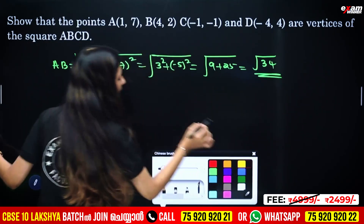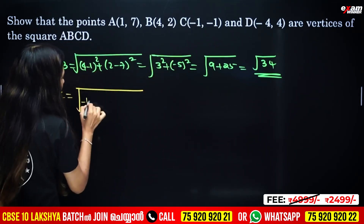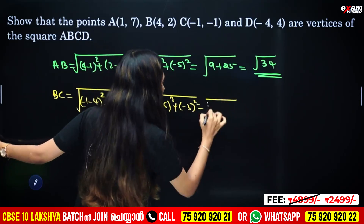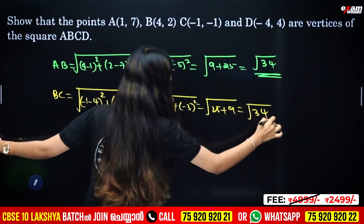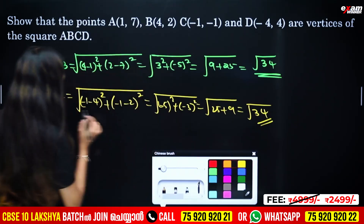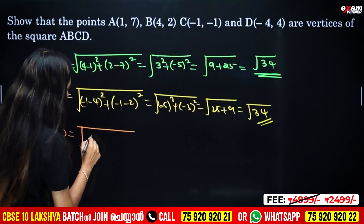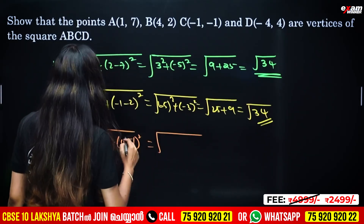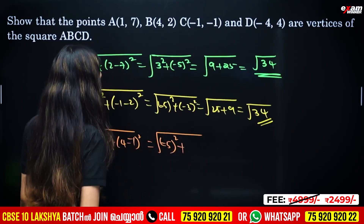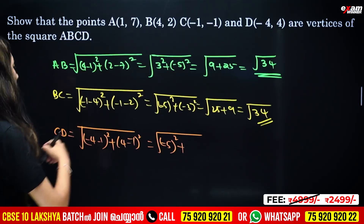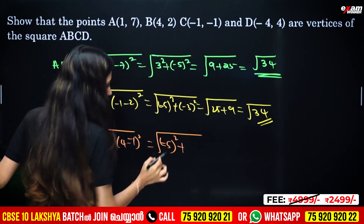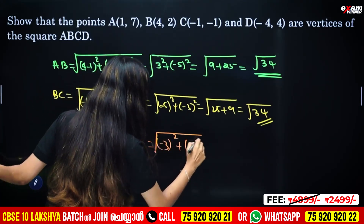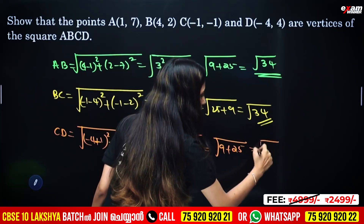For CD: root of (minus 4 minus 1) whole square plus (minus 4 minus minus 1) whole square. That is minus 4 plus 1 = minus 3 squared, giving root of 9 plus 25 = root 34. For AD: root of (minus 5) squared plus (minus 3) squared = root of 25 plus 9 = root 34. All four sides are equal.